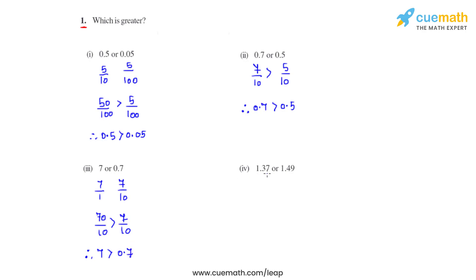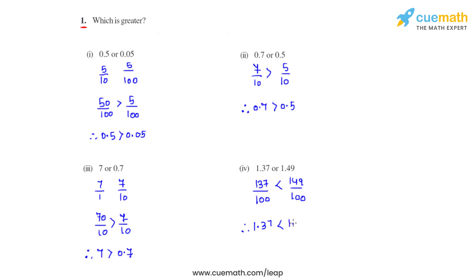Coming to the fourth bit, we have 1.37 and 1.49. The equivalent fraction of 1.37 is 137 over 100 and for 1.49 we have 149 over 100. The denominators are the same, so they are like fractions and we can directly compare the numerators. Since 149 is greater than 137, we write that 137 over 100 is less than 149 over 100, therefore 1.37 is less than 1.49.